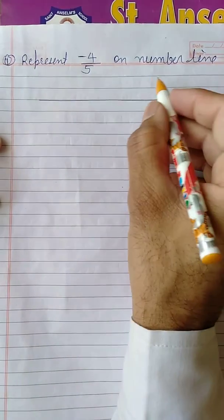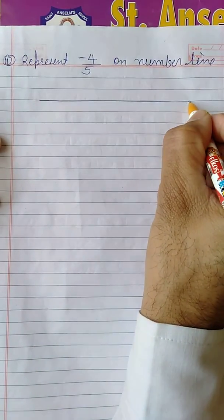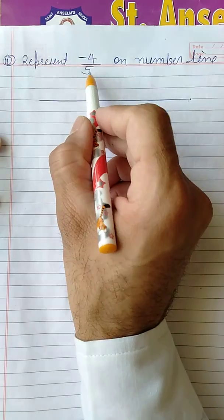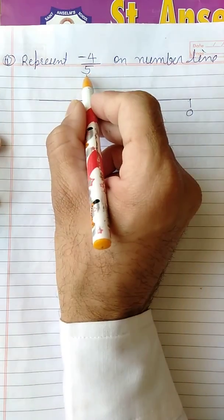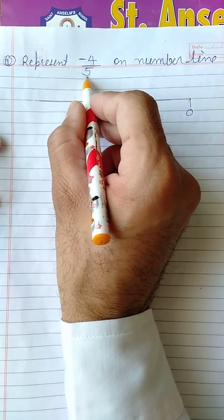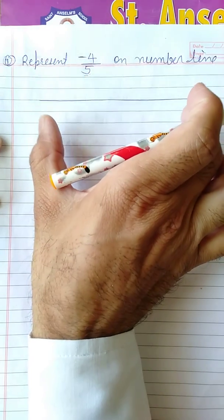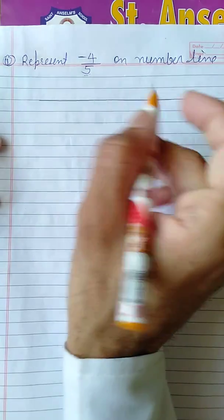As I told in previous videos, first draw a number line. After drawing the number line, see here we will start zero from right hand side. Why? Because this number is negative, so take here zero.